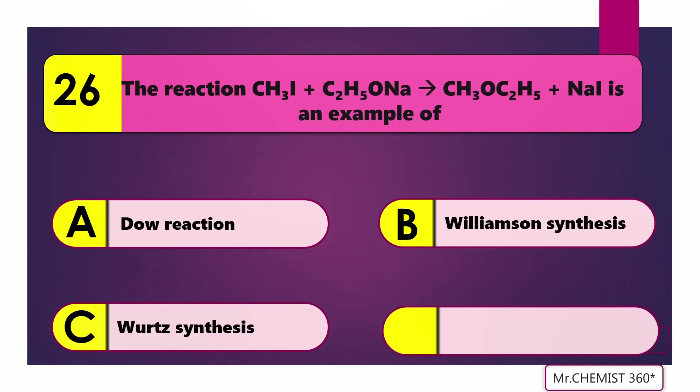Question 26: The reaction — methyl iodide plus sodium ethoxide to form CH₃OC₂H₅ plus NaI — is an example of Williamson ether synthesis.